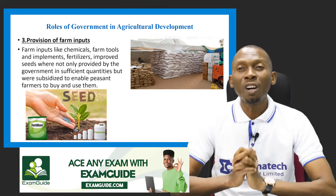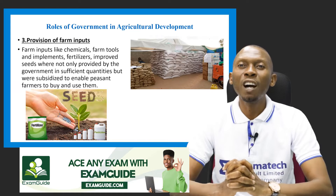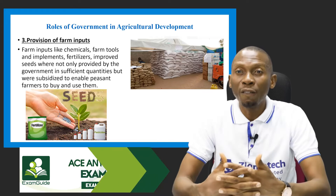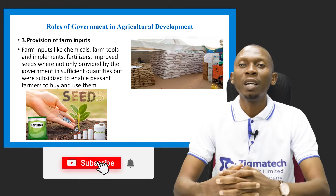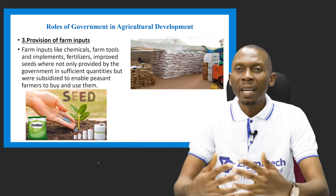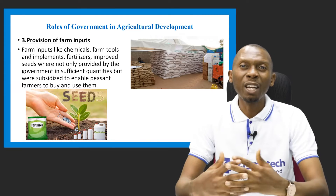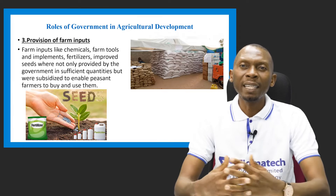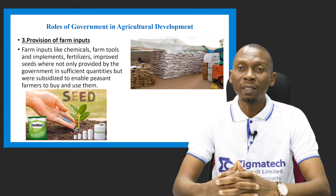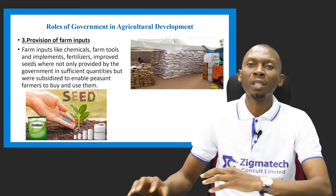Another role the government plays is the provision of farm inputs. These are things used by the farmer in the course of his production, like fertilizers, farm tools and implements, and chemicals. The government has helped to provide these in sufficient quantities and at subsidized rates for the farmers, to enable farmers to buy and use them.